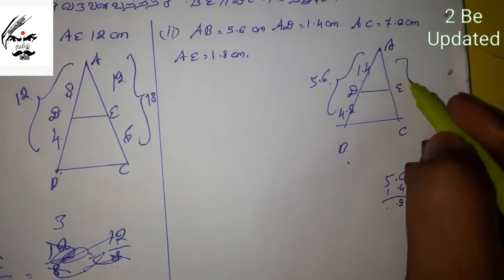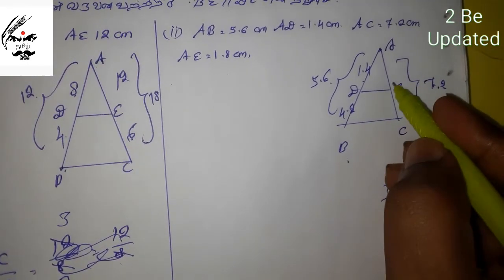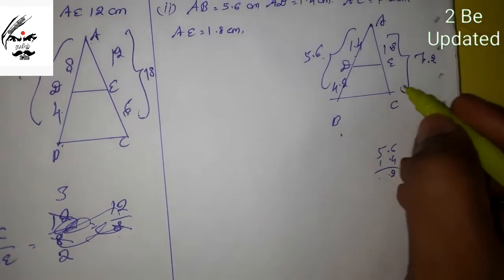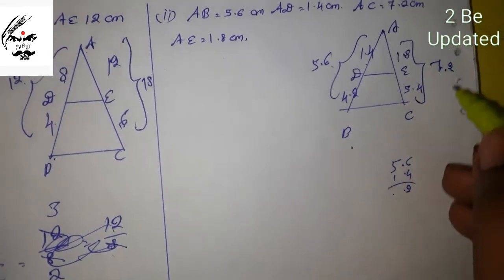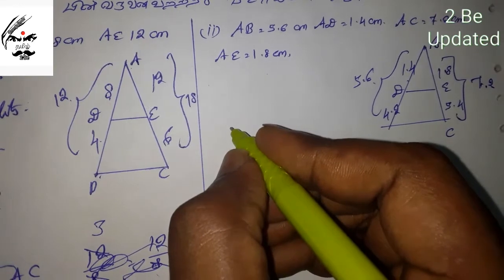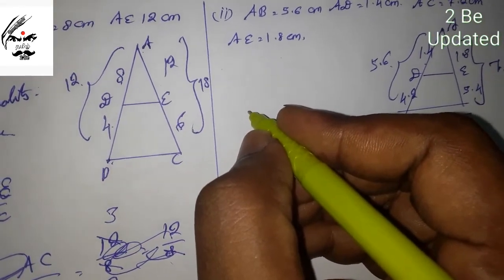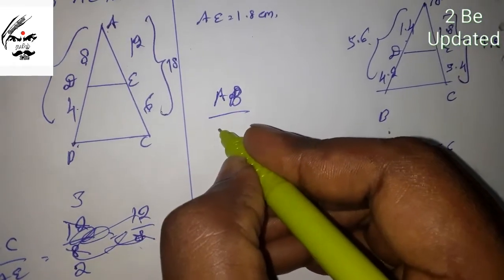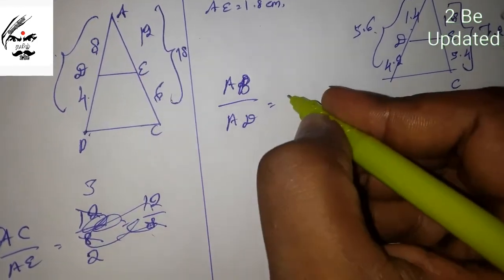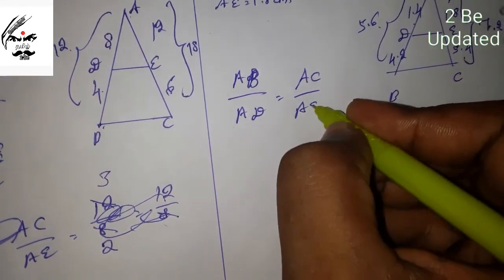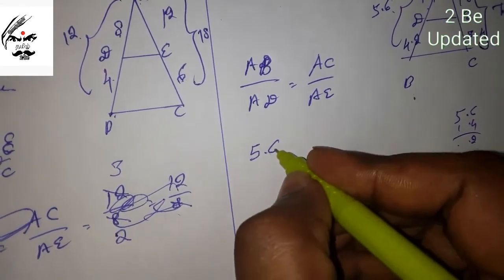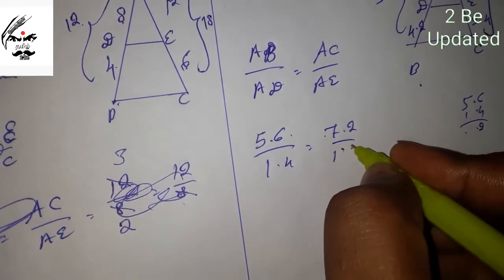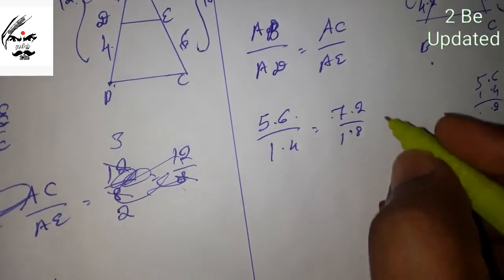AC holds the value of 7.2 and 1.8. This is 5.4. Now we have to write the basic proportionality theorem.